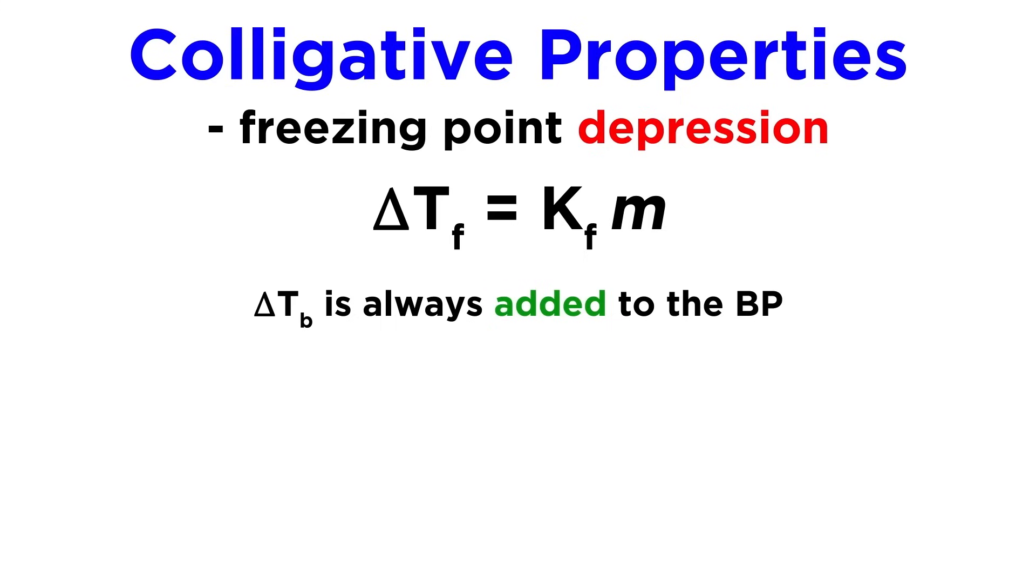But unlike the boiling point elevation, which is always added to the normal boiling point, the freezing point depression will always be subtracted from the normal freezing point, because the presence of solute will always lower the freezing point of a liquid.